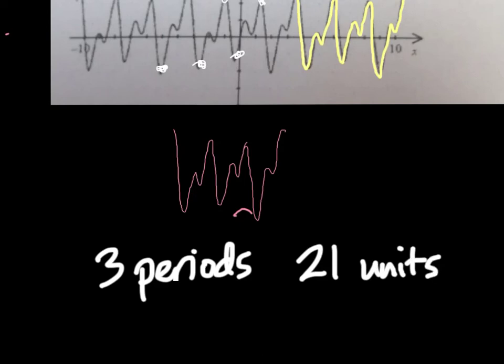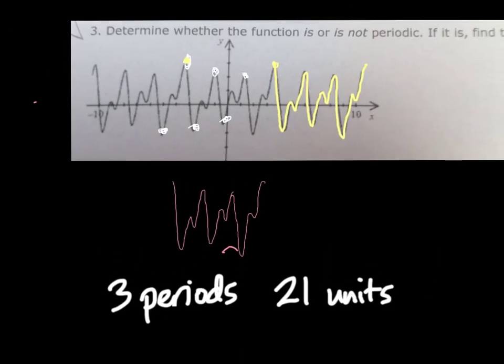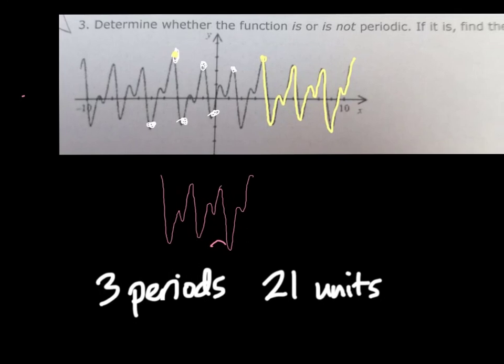In that... It kind of goes from what it looks like maybe negative 10.5 right here to positive 10.5 right there. So, that means the period is seven.